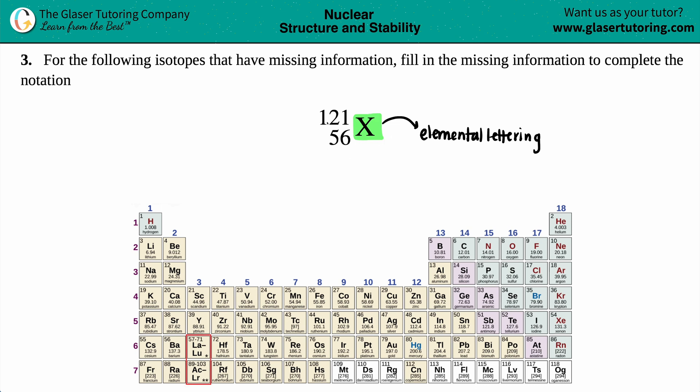Well, how are we going to do that? There's two numbers here. One of them will tell us which element it is. And always, it's going to be the smaller number of the two. Now why is that? Well, because the smaller number is always the atomic number.